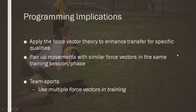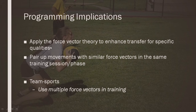So what does this mean for our training and programming? Essentially we need to make sure we apply the force vector theory in order to enhance transfer to specific qualities like sprinting, jumping, throwing, and things like that. We need to do exercises where, depending on what qualities we want to enhance, the direction of the exercises we're using are similar to that of the quality we're trying to enhance.